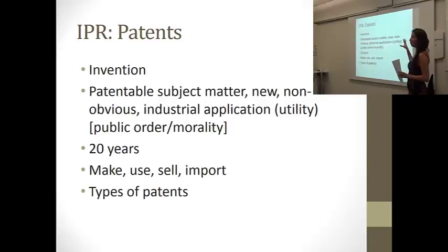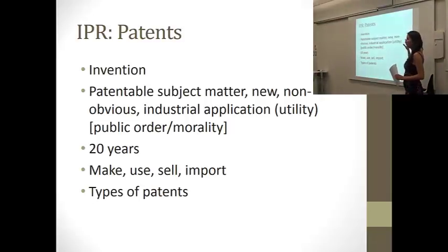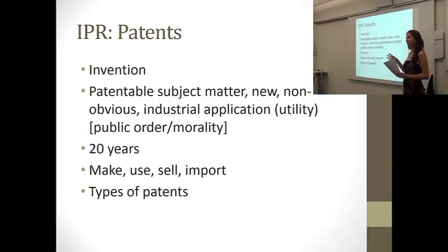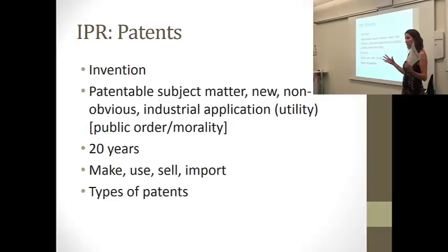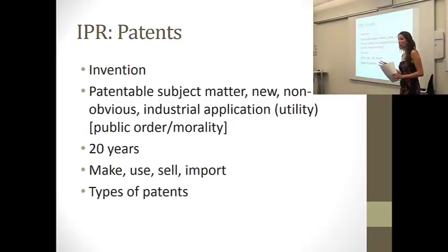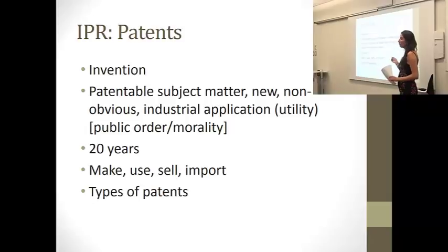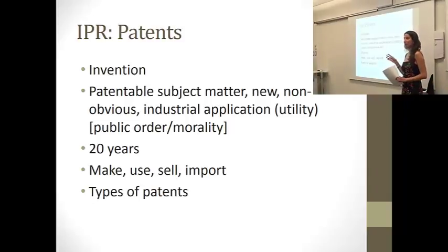An invention is considered new when it results from a creative activity from the human being and is not in the state of the art — the cumulative knowledge and technology. So it basically can't already exist. The non-obvious requirement means that a person skilled in the art doesn't see this as the obvious next step within the field.